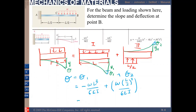Adding these values together, the total slope at point B is theta = 7wL³ / 48EI. So just by using the table from Appendix D, we can obtain the slope and deflection at point B using the method of superposition.